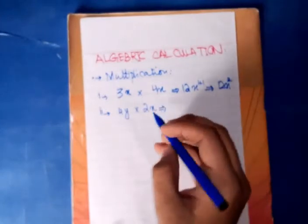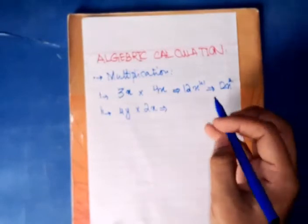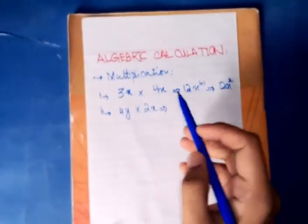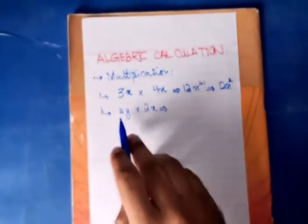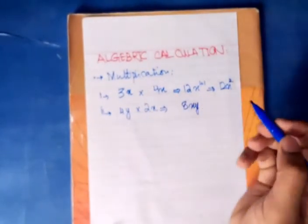In the second condition, if you have different variables, you will simply multiply them and write as the answer. That is, 4 times 2 is 8, and x times y is xy.